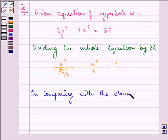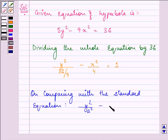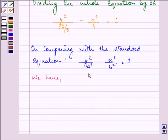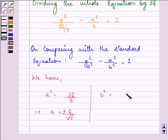Now on comparing it with the standard equation, that is y²/a² - x²/b² = 1, we have the value of a² as 36/5. That means the value of a is equal to 6/√5. Further we have the value of b² as 4, that means the value of b is plus minus 2.